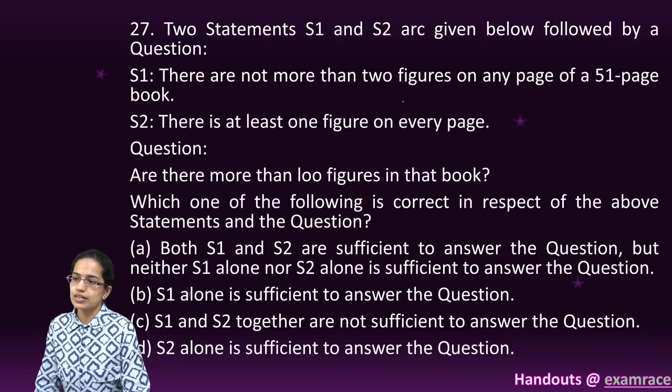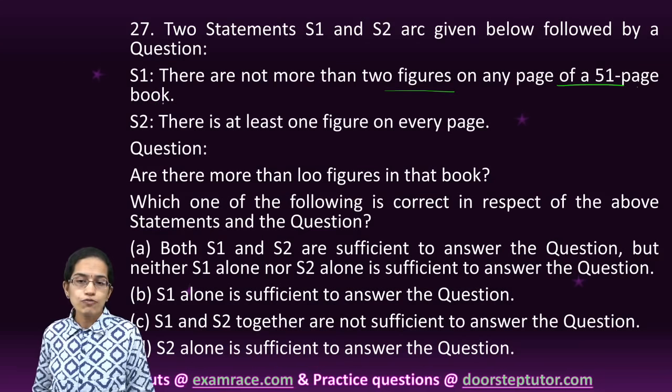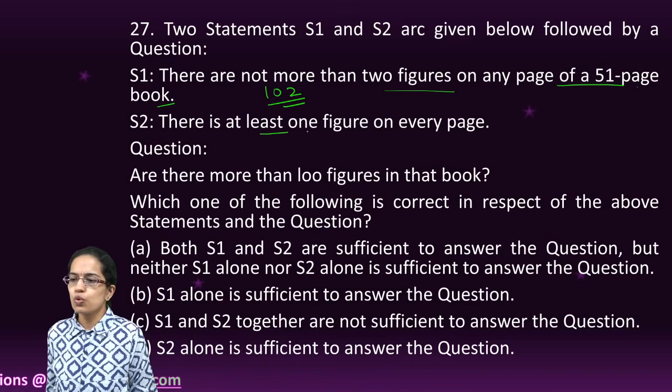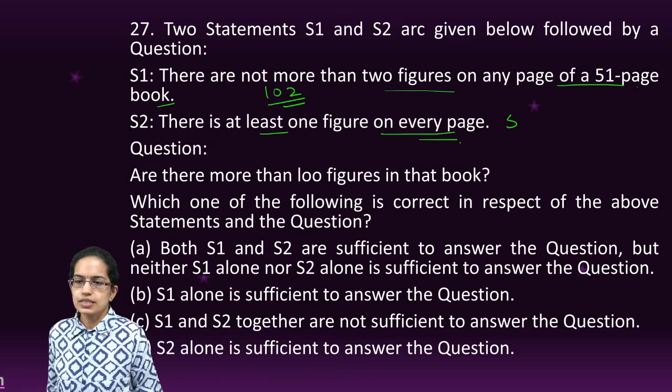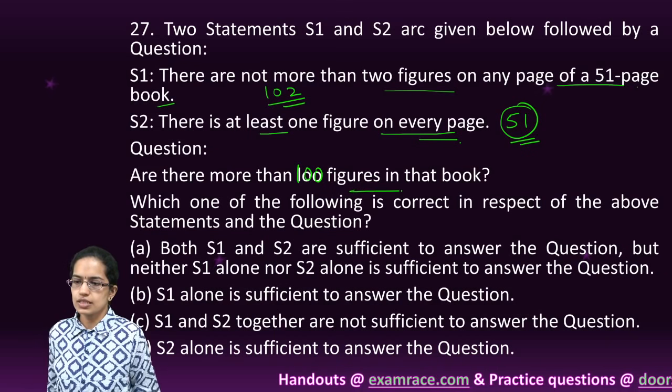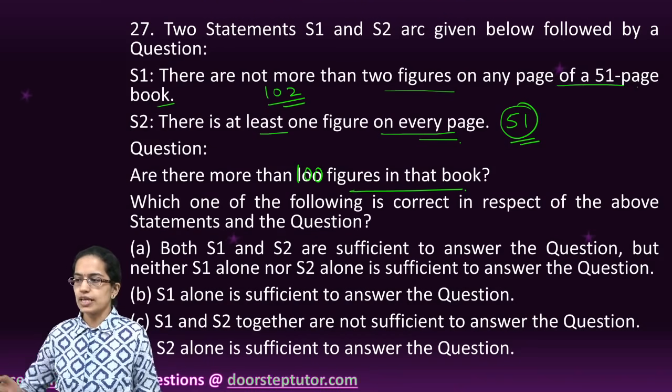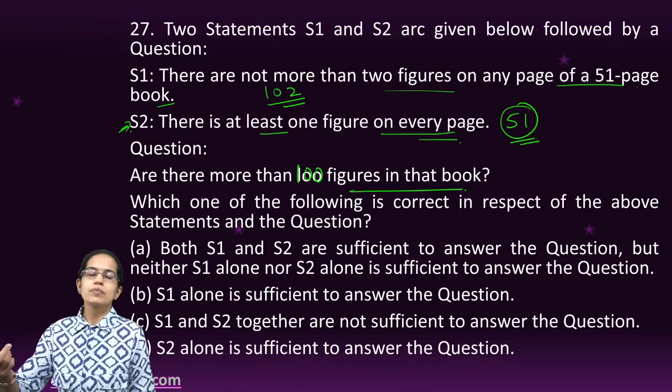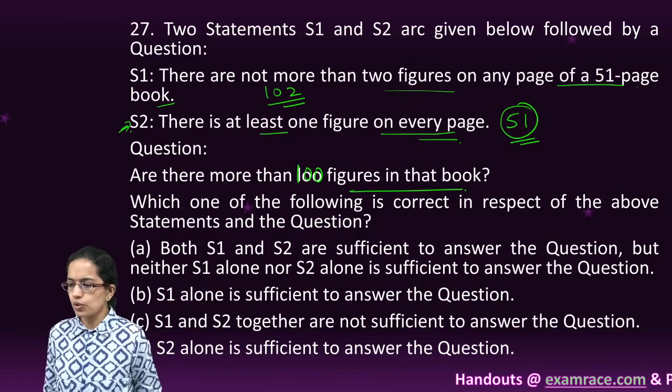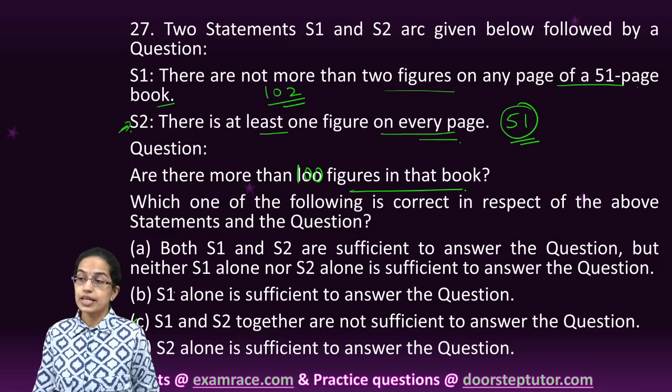Now this is a very interesting question. There are not more than 2 figures on any page of a 51 pages book. That means the maximum number of figures can be 102. But there is at least 1 figure on every page. That means there are 51 figures that are there. So S1 and S2 together are not sufficient to answer this question.